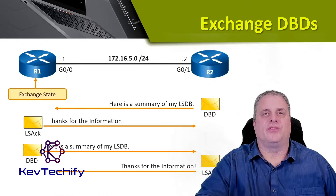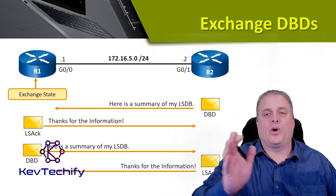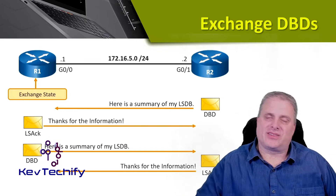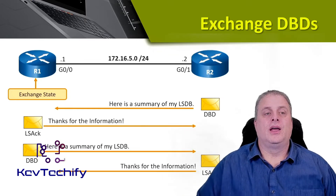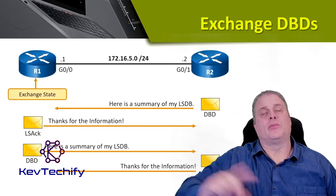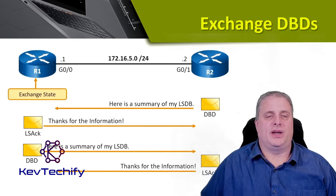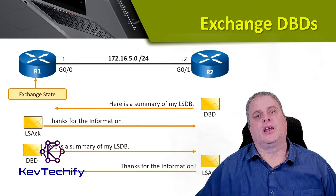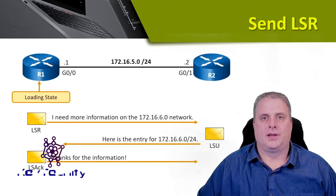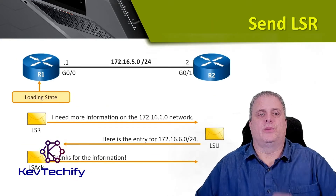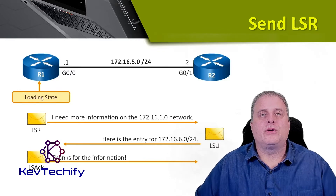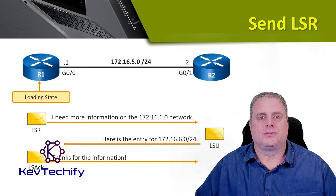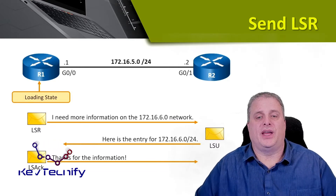The DBD is a summary of that link state database. R2 sends that summary over to R1. R1 then sends a link state acknowledgement back, saying thank you for that information. Then R1 sends its summary of its link state database — the DBD from R1 to R2 — and R2 sends an acknowledgement saying thank you for sending that over. After we have viewed our database description packets, the routers respond to each other with link state requests, LSRs, and link state updates, LSUs.